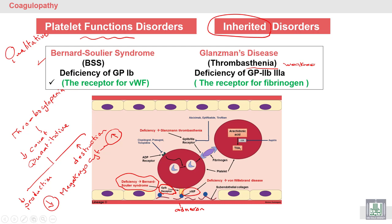The result is decreased adhesion to the subendothelial collagen. In Glanzmann's disease, or Glanzmann's thrombasthenia, there is deficiency of glycoprotein 2b/3a, which is the receptor for fibrinogen — the protein responsible for platelet-platelet interaction — so there is a defect in aggregation.